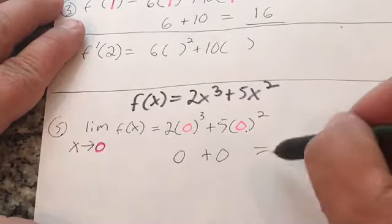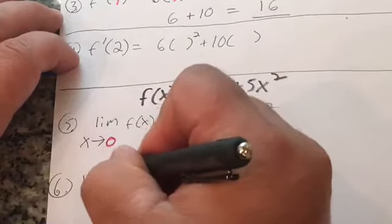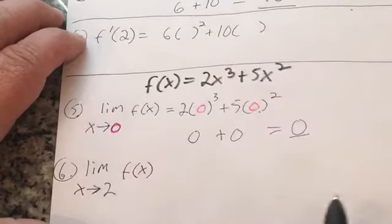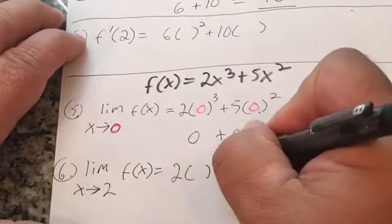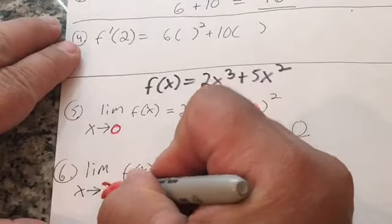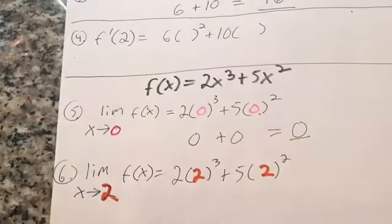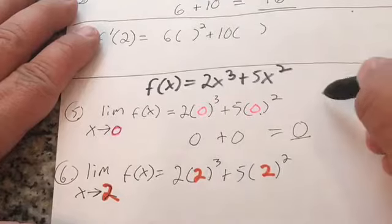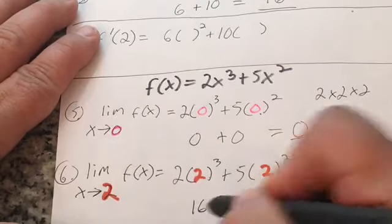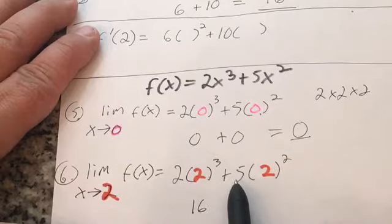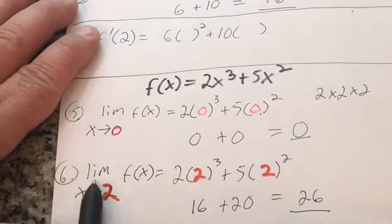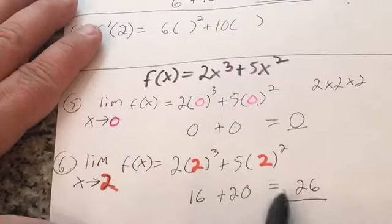Number six: find the limit as x approaches two of f of x. I plug two into the original function: 2 times two cubed plus 5 times two squared. Two cubed is eight, times 2 is 16; two squared is four, times 5 is 20. That equals 36. Wait — 2 times eight is 16, plus 20 equals 36. The limit as x approaches two of f of x equals 36.